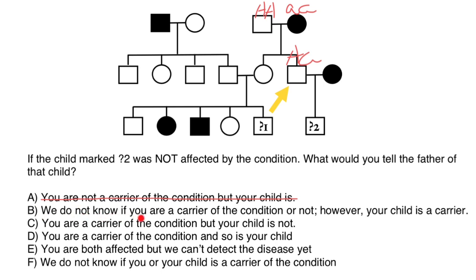Next, variant B: we do not know if you are a carrier, but your child is. No — we do know this person is a carrier, so we cross out variant B. Next, variant C: you are a carrier, but your child is not. The mother has to be homozygous recessive. If the child is phenotypically normal and unaffected, that means from the father's side the child got the dominant normal A allele, but from the mother's side the child can only inherit a recessive allele. So if the child's phenotype is normal, the child is also an obligate carrier just like the father. This statement is false.